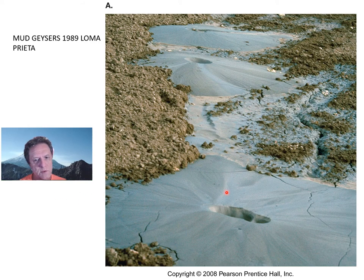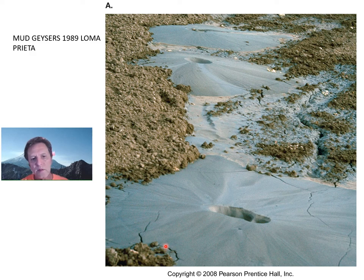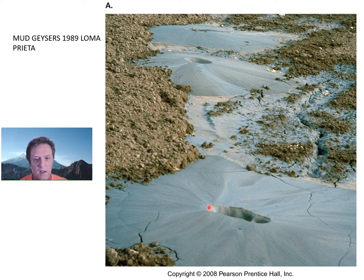Another hazard is a phenomenon known as a mud geyser or sand volcano. When you have a shallow water table with loose sand in the saturated zone, an earthquake shakes everything up, the loose saturated sand grains come apart, water separates the grains and liquefies those layers of sand. If fractures form above the sand, the sand can shoot up through the fractures and come out as little mud geysers or sand volcanoes.